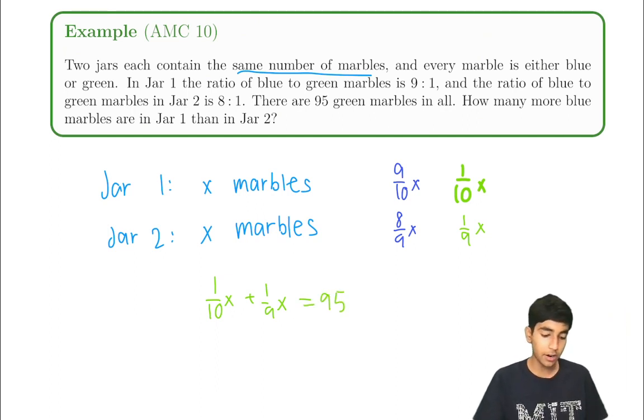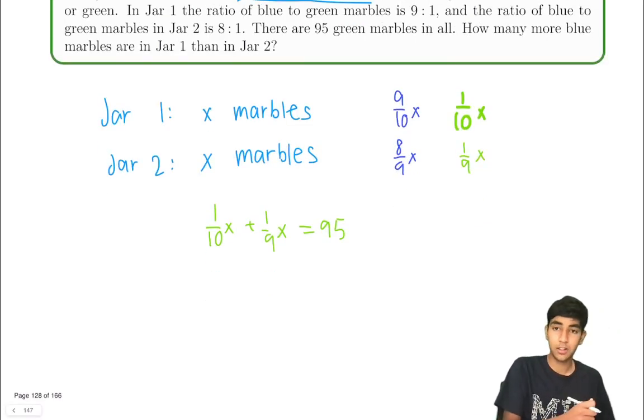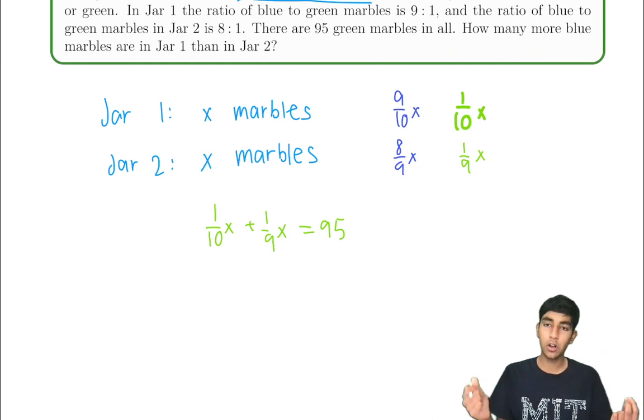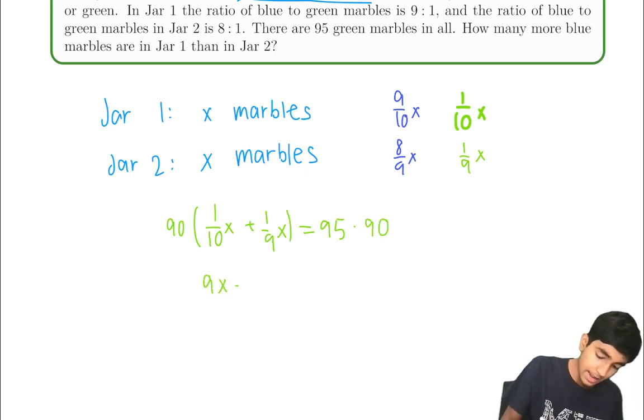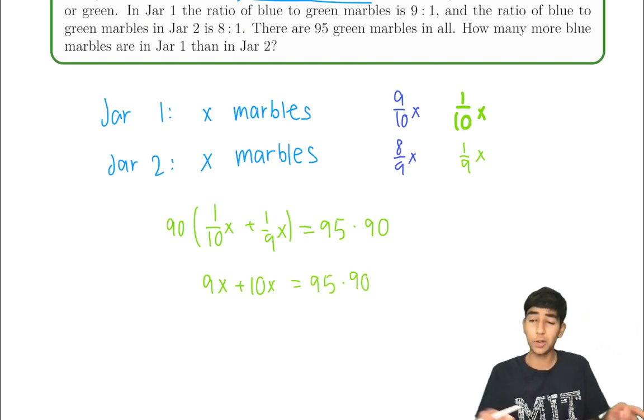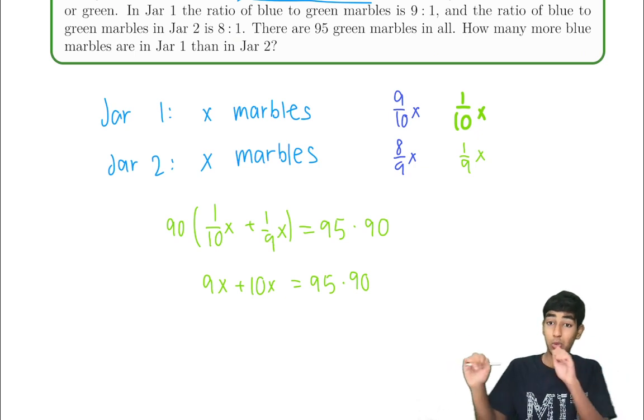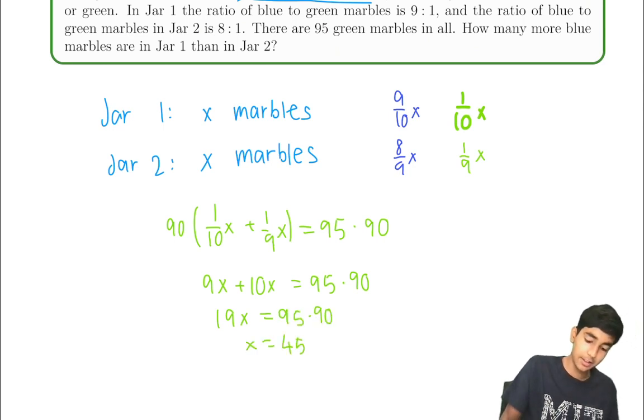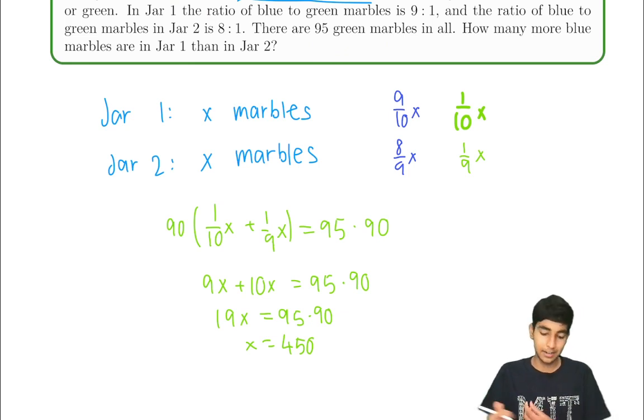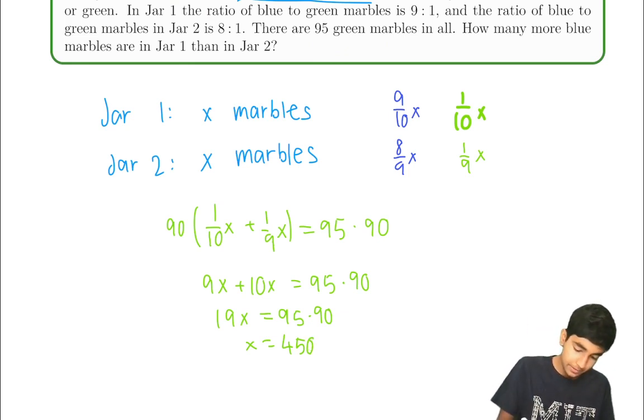How many more blue marbles are in jar one than jar two? Okay, so we've got a simple equation here. Let's multiply by 90 to get rid of all these fractions. 90 times the whole thing times 90. This becomes 9x plus 10x equals 95 times 90 and a common mistake is to try and multiply it out immediately. Wait. Things will often cancel like they are going to now. 19x is 95 times 90. X is 5 times 90 or 450 because 95 is 5 times 19.